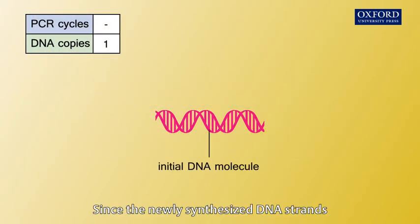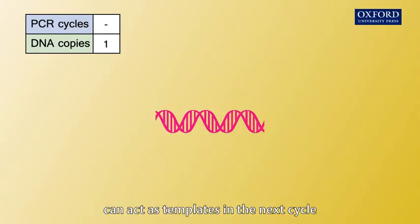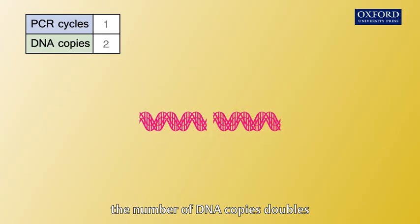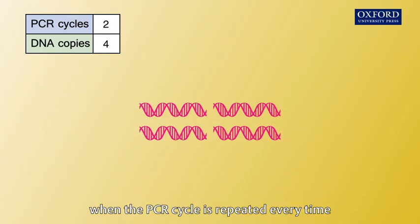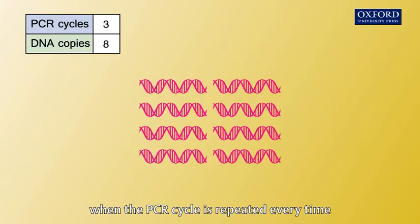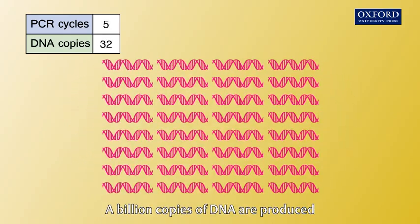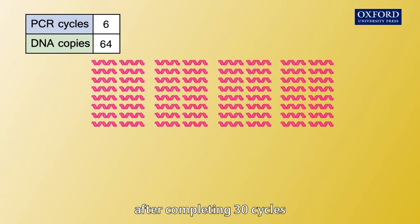Since the newly synthesized DNA strands can act as templates in the next cycle, the number of DNA copies doubles when the PCR cycle is repeated every time. A billion copies of DNA are produced after completing 30 cycles.